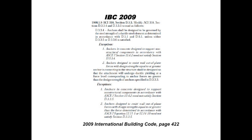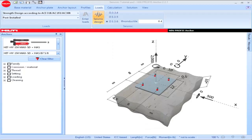IBC 2009 contains seismic provisions for anchorage of non-structural components and anchors designed to resist wall out-of-plane forces. Part 1908.1.9 waives the ductility requirements of ACI 318-08 Part D.3.3.4 and D.3.3.5 when the anchorage includes design for non-structural components or anchors designed to resist wall out-of-plane forces. When anchor design includes the provisions of IBC 2009 Part 1908.1.9, PROFIS Anchor users can input a value for phi non-ductile equal to 1, permitting an anchor design that includes both ductile and non-ductile anchor elements.